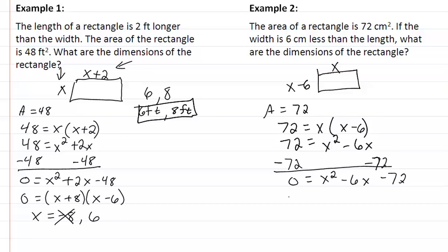This will factor really easy, you are going to find most of these will factor fairly easy. Factors of 72 that when we take the difference give us 6, well it's going to be a negative 12 and a positive 6.